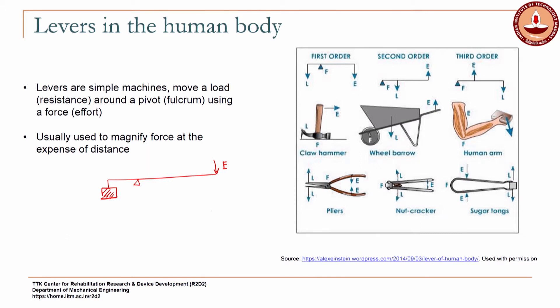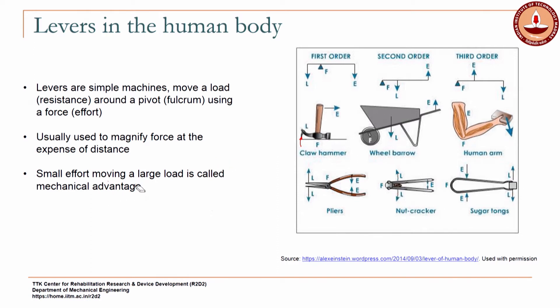For example, with a claw hammer that is pulling out a nail, the hammer has a long handle. You apply a small effort and you are able to pull out the nail, applying a much higher force to do so. This is called the magnification of force — a small effort moving a large load — and that is called mechanical advantage, which is one of the biggest uses of levers.